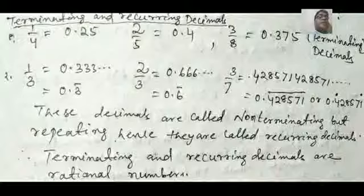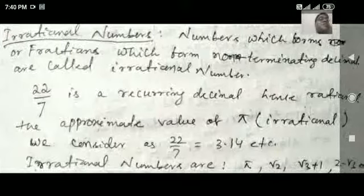Terminating and recurring decimals are your rational numbers. Next about irrational numbers.